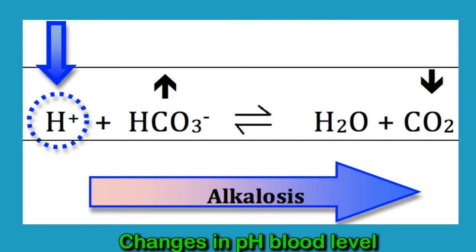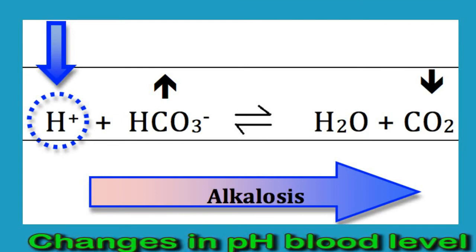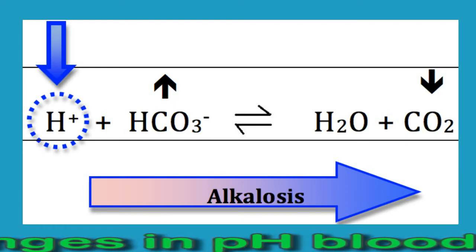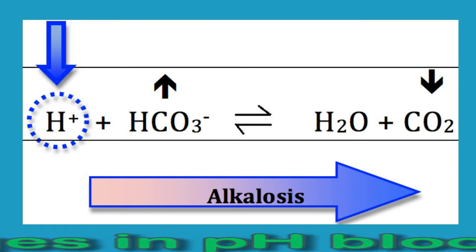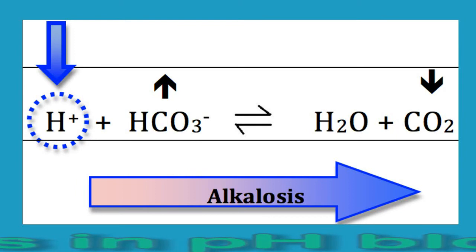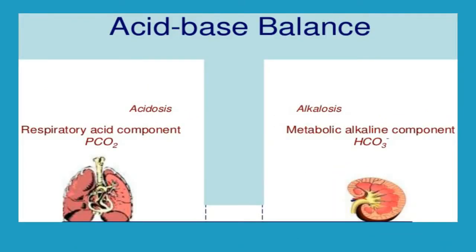Metabolic acidosis occurs due to reduced bicarbonate or increased acid levels. Respiratory acidosis occurs when the body removes less carbon dioxide than usual. Metabolic alkalosis occurs due to increased bicarbonate or reduced acid levels. Respiratory alkalosis occurs when the body removes more carbon dioxide than usual. To restore blood pH levels to a healthy range, it is important to identify and treat the underlying issue that has caused the changes.